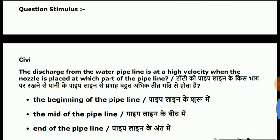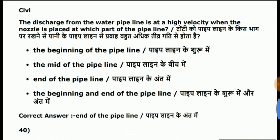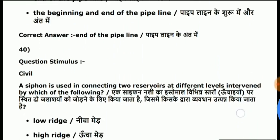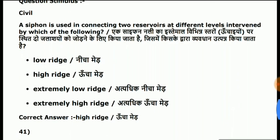Question 39: the discharge from the water pipeline is at a high velocity when the nozzle is placed at which part of the pipeline? Answer is end of the pipeline. Question 40: a siphon is used in connecting two reservoirs at different levels, intervened by which of the following? Answer is high ridge.